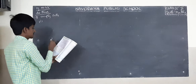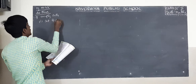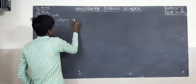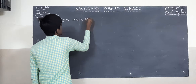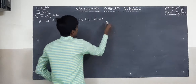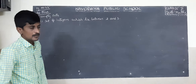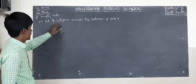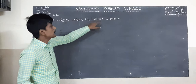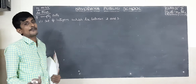First one: set of integers which lie between 2 and 3. What are the integers in between 2 and 3? There are no numbers.